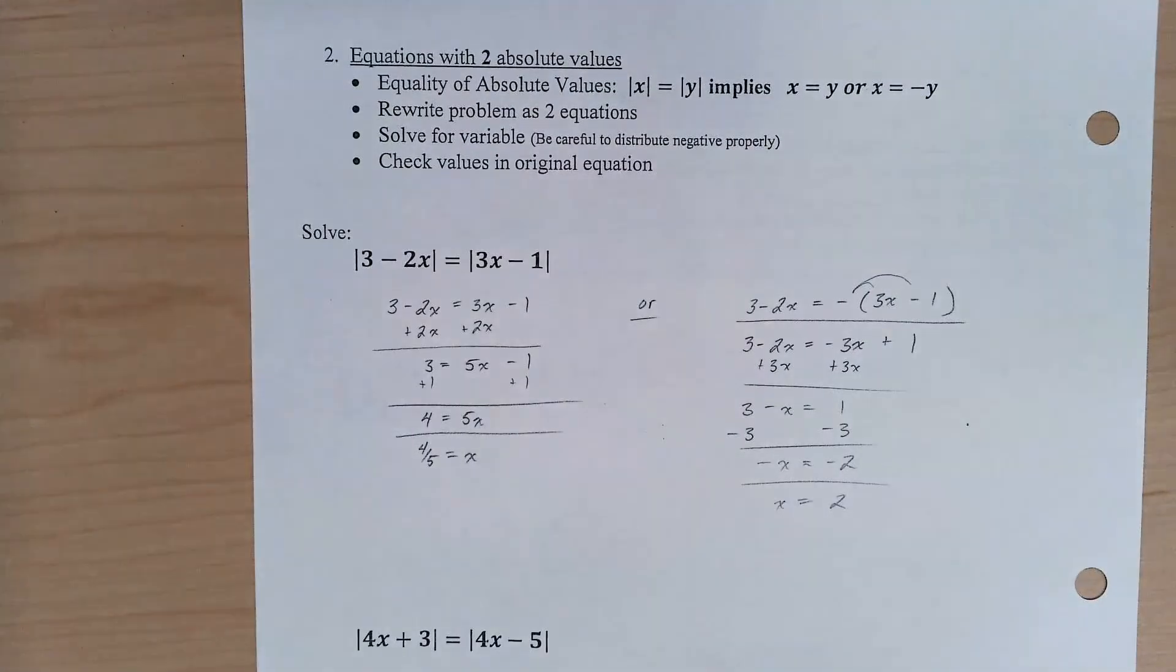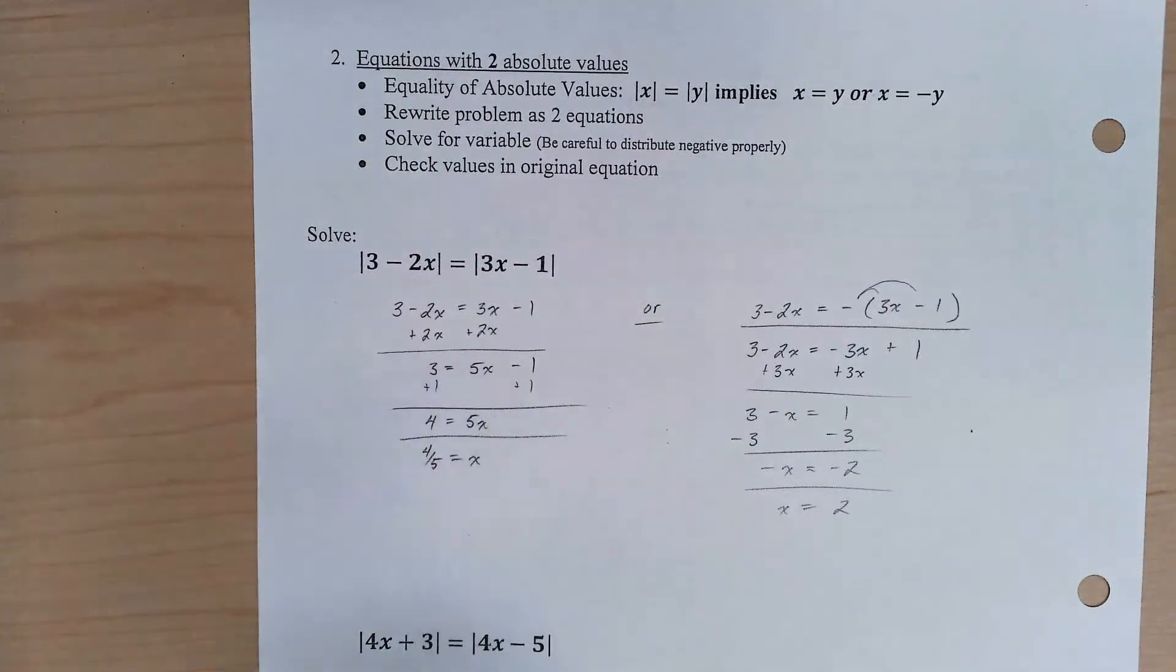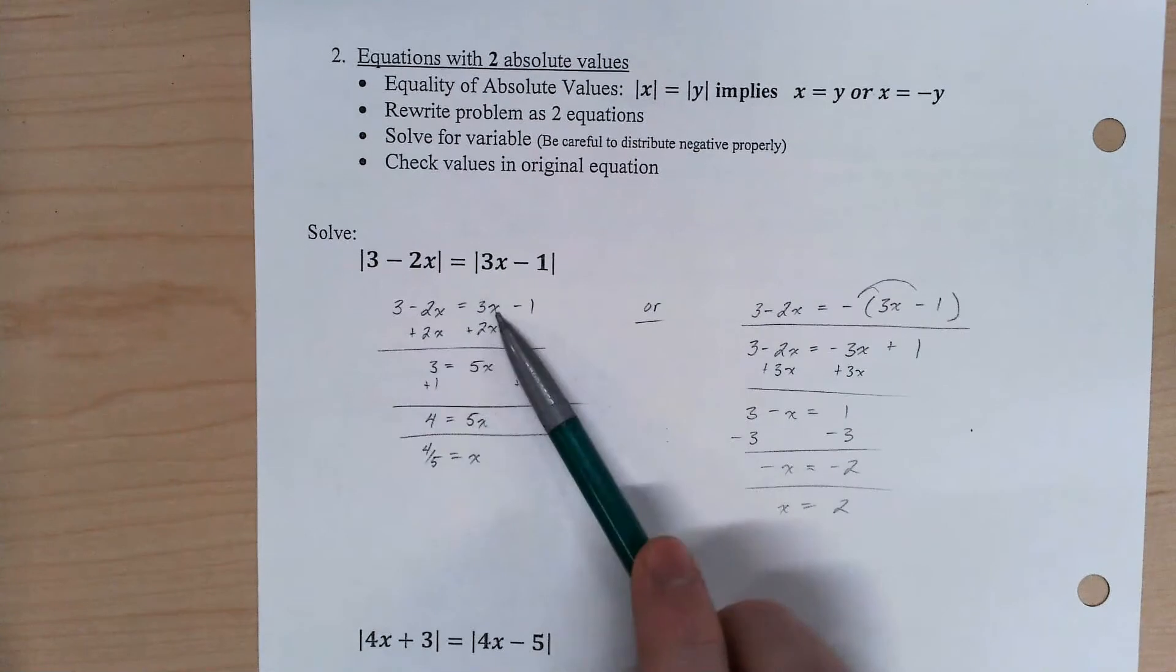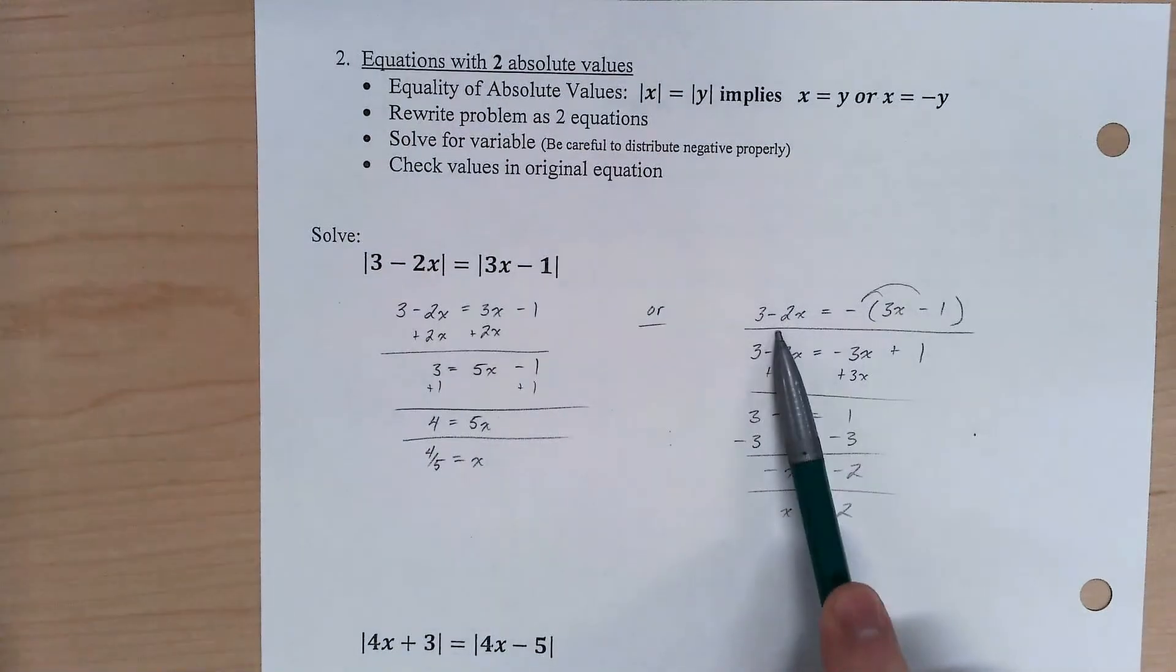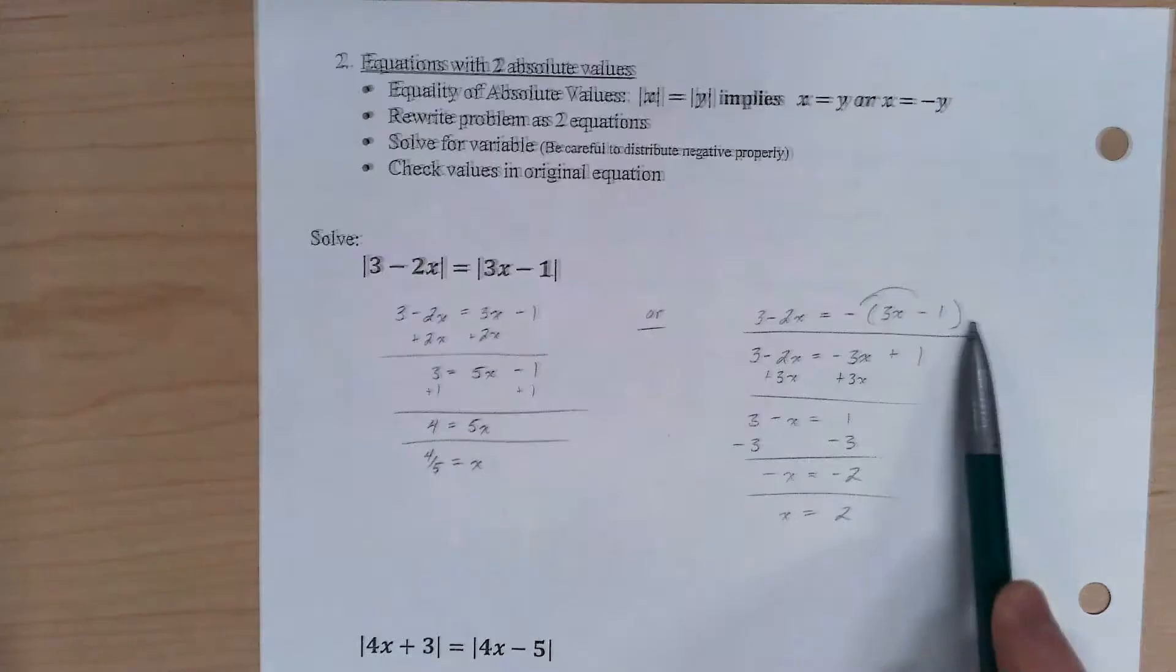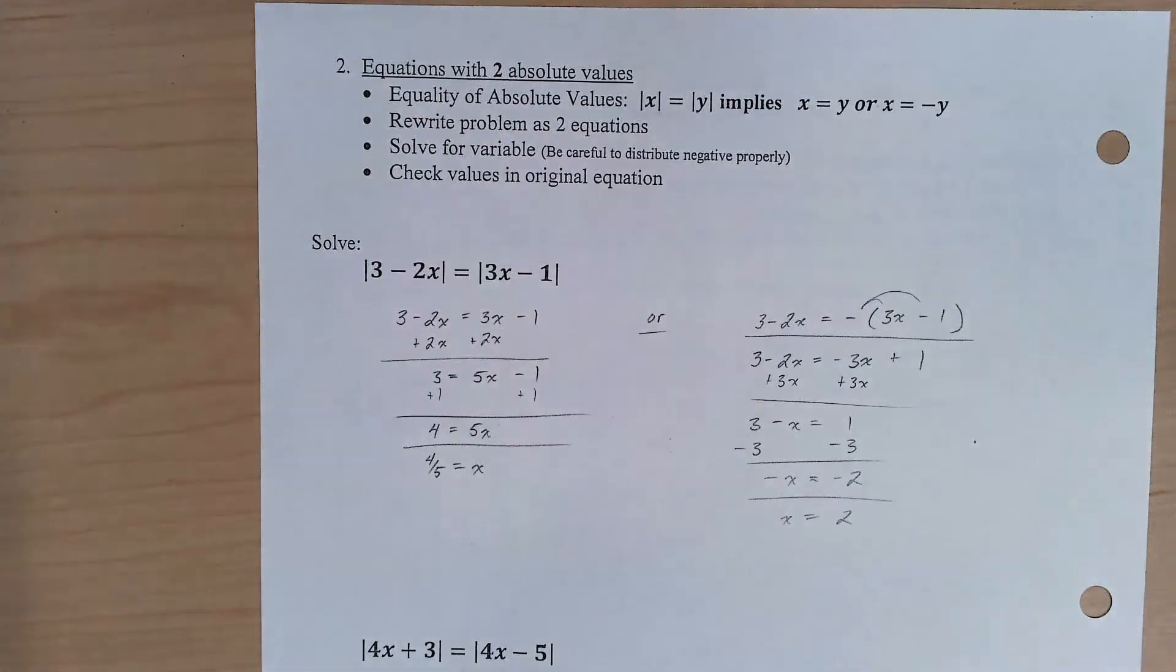Notice again, like before, that I throw the negative on back here. I don't throw it on the end and say, oh, it's 4 fifths or it's negative 4 fifths. I don't do that. What I need to do is set the inside as equal and say it's that, or one inside is equal to the negative of the other. And it doesn't matter which one you throw the negative on, as long as you throw it on one of them.